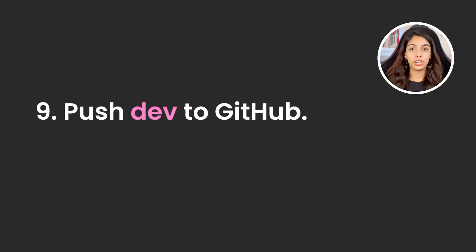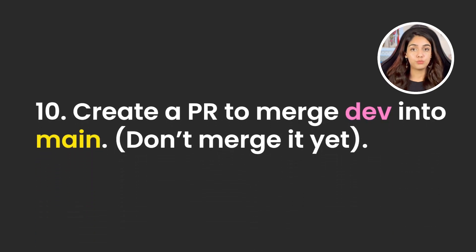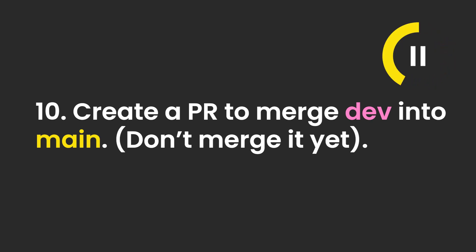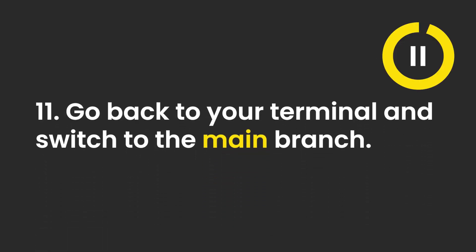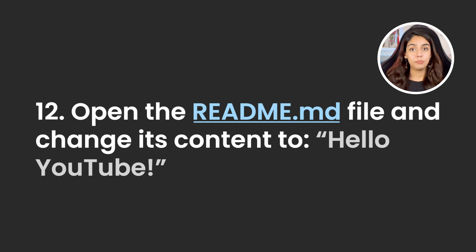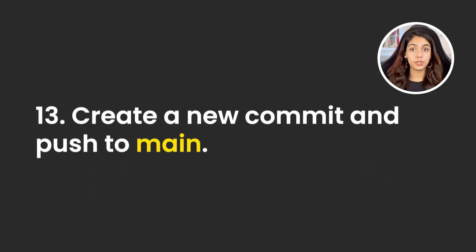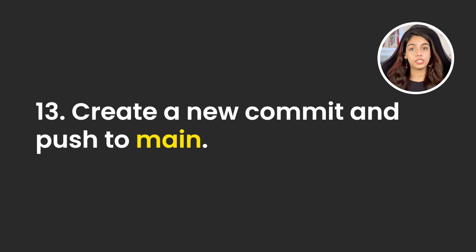Push your dev branch to GitHub. Now create a pull request to merge your dev branch into your main branch. Now go back to your terminal and switch to the main branch. Open the same readme file and replace hello world with hello YouTube. Now create another commit in your main branch and push this main branch to GitHub.